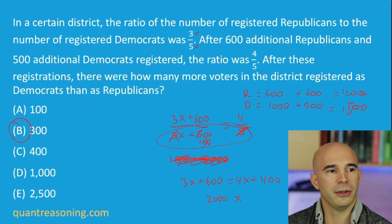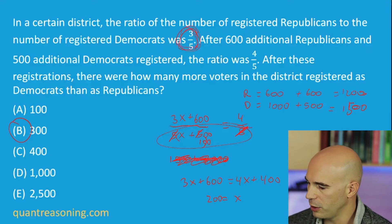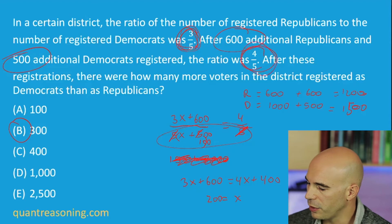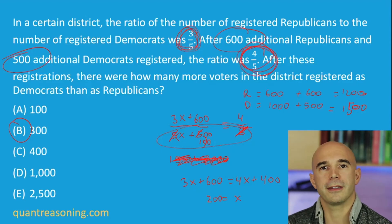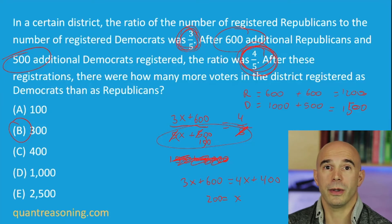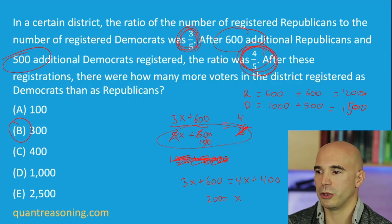So why can we use a number line to solve this question? We have a mixture of two ratios: a ratio of 3 to 5, and we're mixing that with a ratio of 600 to 500, or 6 to 5, ending up with a mixture ratio of 4 to 5. So even though this question doesn't immediately look like a mixture question, it is — it describes mixing two ratios to produce some midpoint ratio in between the two we started with.